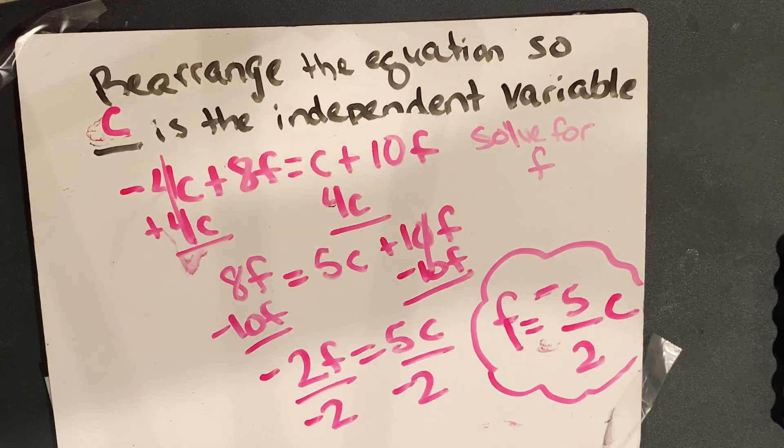That seems a little complicated because we didn't have a constant, but that's okay — the steps are still the same. I'm still getting rid of my coefficient, still getting everything that's the same on one side of the equal sign and everything that's different on the other side. So we solve for F: F equals negative 5 halves C.